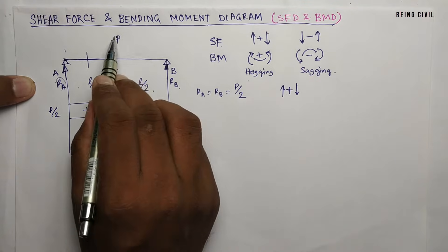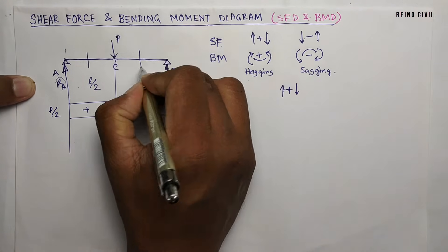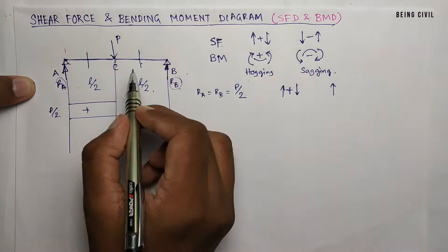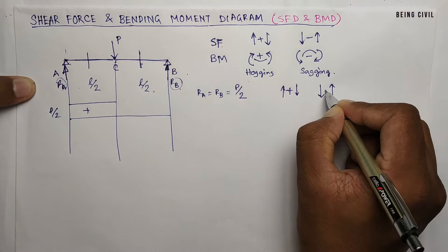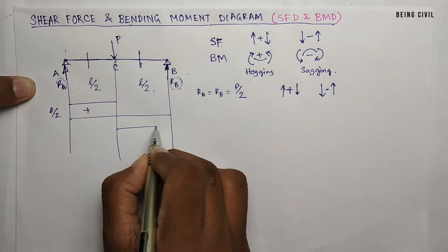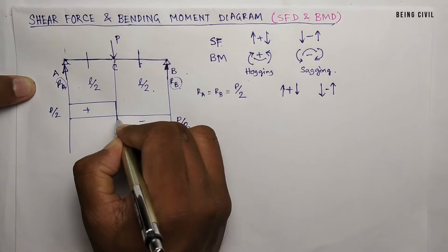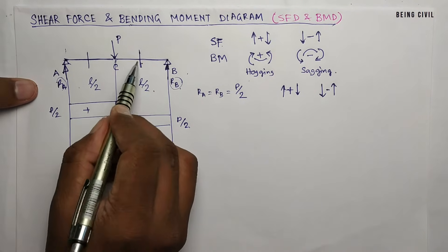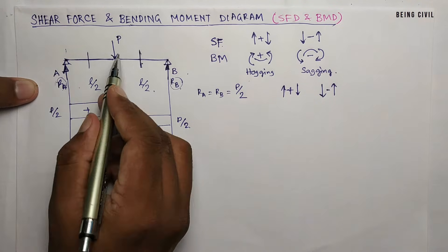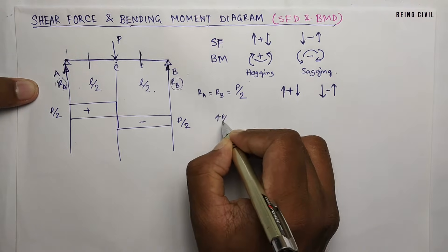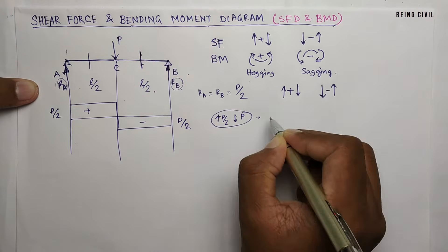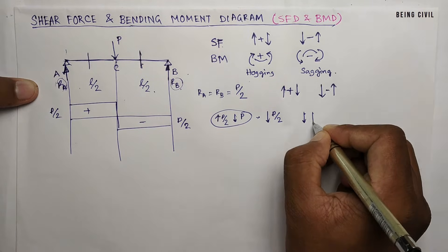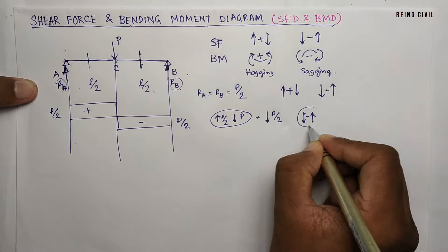To the right side of force P, for the CB portion, if you cut the section here and take the right side forces you get RB which is upward with magnitude P by 2, so you get a force downward here — this is negative. So you get the same magnitude P by 2 but negative. Instead of taking the right side forces, if you take the left side forces you get the same result: RA upward P by 2 and P downward gives an algebraic sum of P by 2 downward. So at this section the left side is downward, meaning it will be negative shear force — the same result.